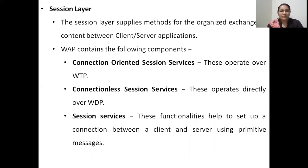The session layer of the wireless network consists of one or more methods using which an organized exchange of content can happen between the client and server application. There are three main components in the WAP session layer. The first is connection-oriented session services, which operate on the WTP wireless transaction protocol and provide a connection-oriented exchange of data. The second is connectionless session services, which operate directly on the wireless datagram protocol WDP and provide datagram services without a formal establishment of connection. The third is session services, which are functionalities that help to set up a connection between the client and server using primitive messages. The job of the session layer is to establish a connection between the client and server application for data transmission.